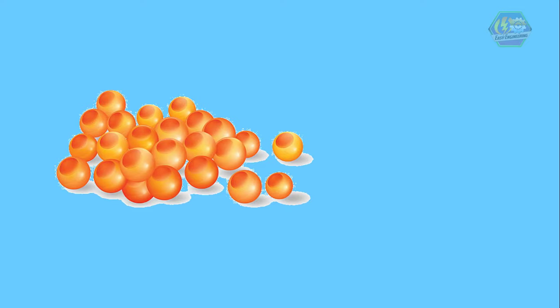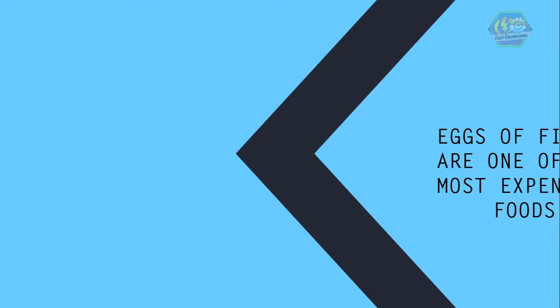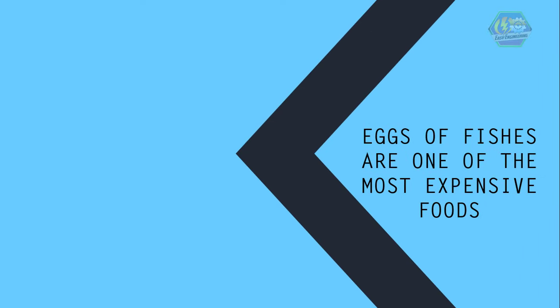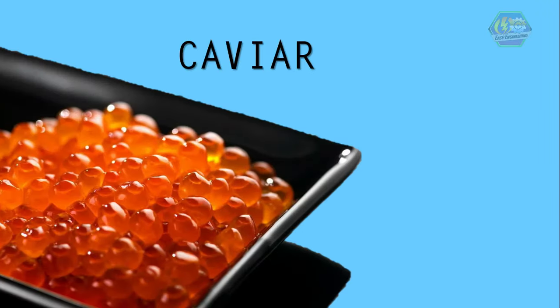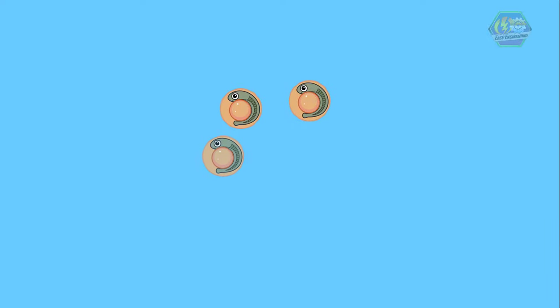Fun fact, learners: did you know that the eggs of fishes are one of the most expensive foods there is? It's called caviar. It is made from the unfertilized eggs of the sturgeon family of fish, then salt-cured. After the embryo is formed, it will start to develop organs. Eye spots and tails are also developed after.